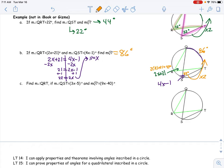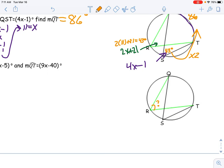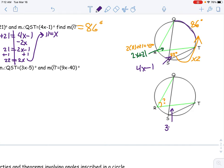And then last problem right here. We've got to find angle QRT this time—that's the mystery. It's telling me that angle QST, this one right here, is 3x minus 5, and it's telling me that this arc over here is 9x minus 40.